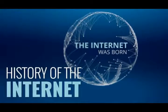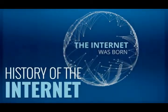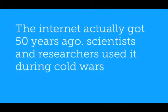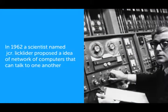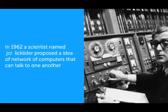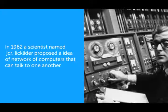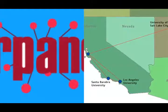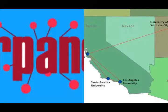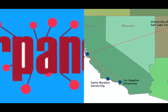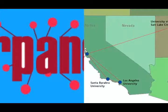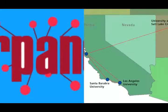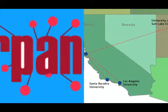Before going to know how the internet works, let us know a brief history of the internet. The internet actually got started 50 years ago. Scientists and researchers used it during the Cold War. In 1962, a scientist named Licklider proposed an idea of a network of computers that can talk to one another. In 1969, the first-ever message was sent from one computer to another over a network of computers called ARPANET. ARPANET was the government network at that time, and it stands for Advanced Research Projects Agency Network. The first message was sent through ARPANET between two computers — one at Stanford and the other at UCLA.